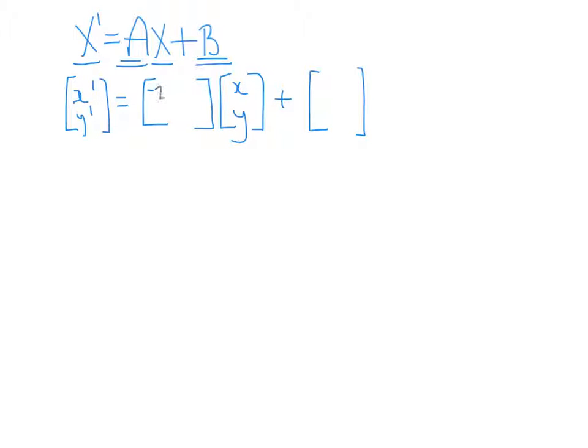So it'll be minus 2, 0, 0, 1 and it had to be translated 2 units in the negative x direction so I'll take away 2 from each of the x values and I'll take away 1 from the y values because it's being translated 1 unit in the negative y direction.